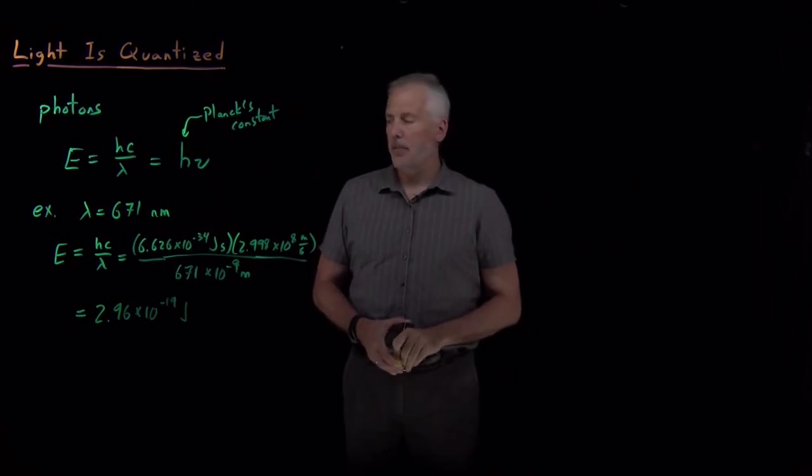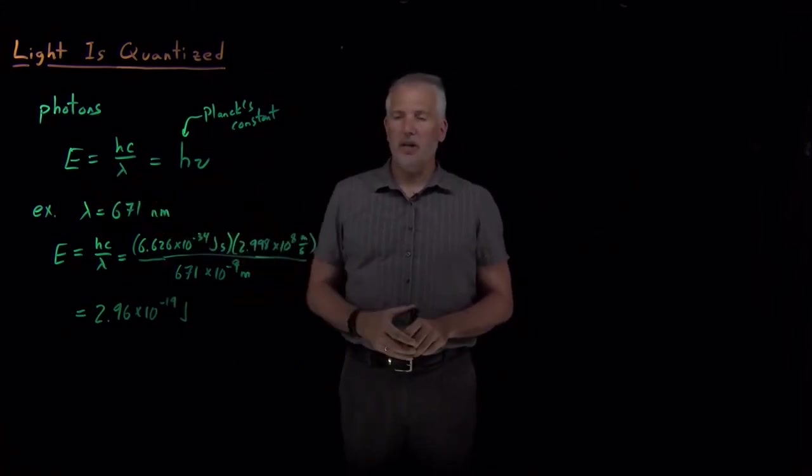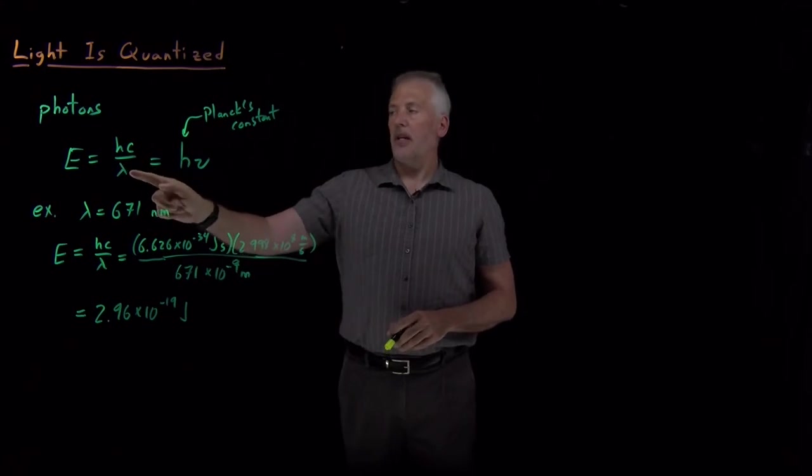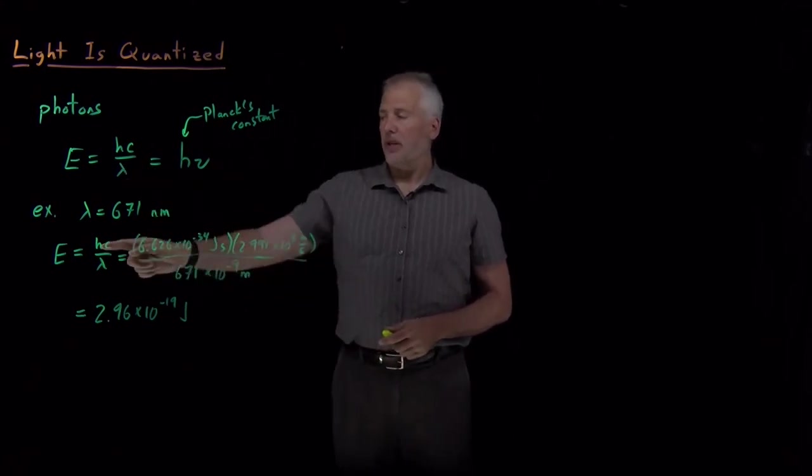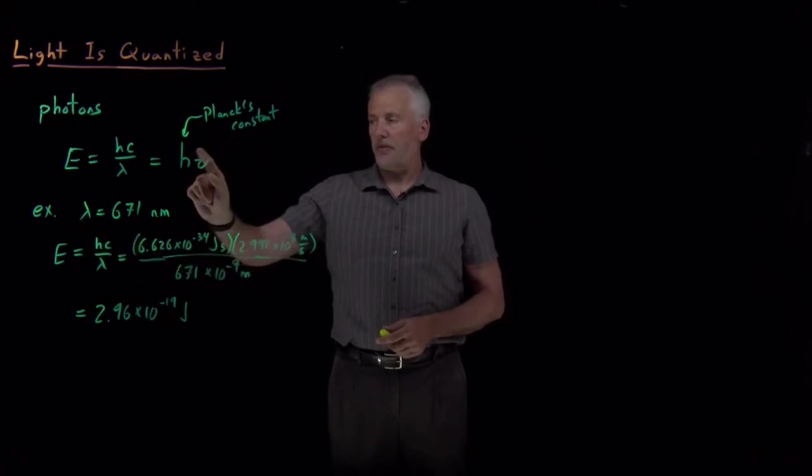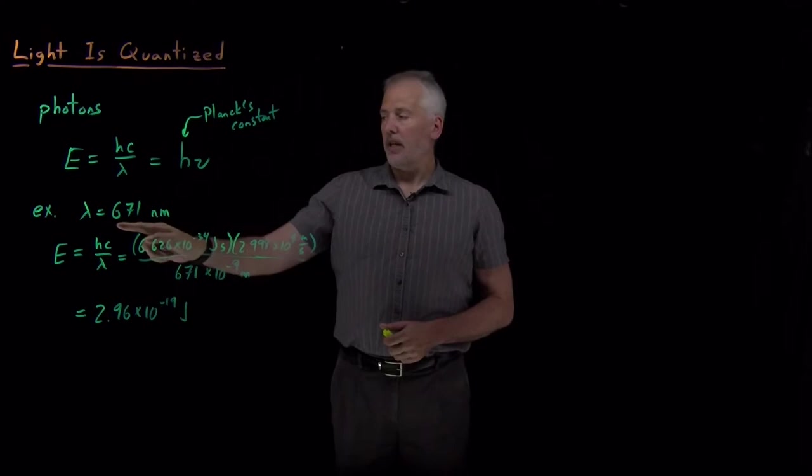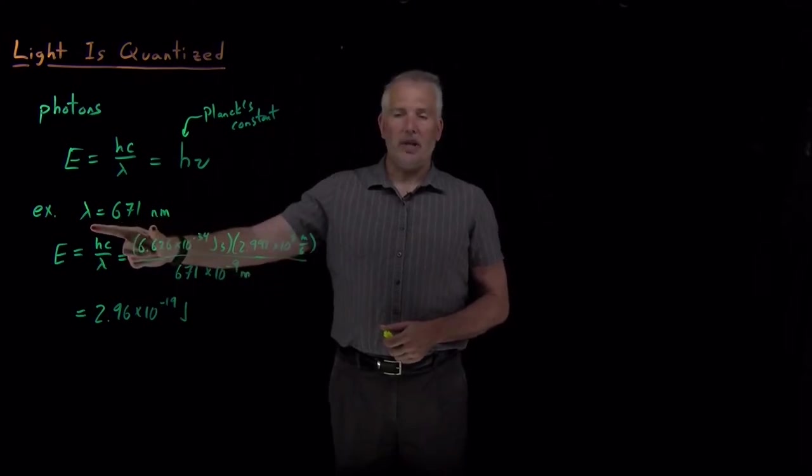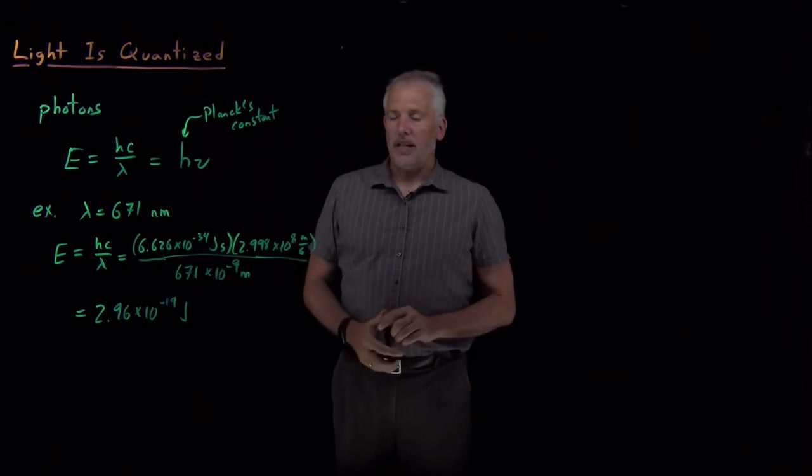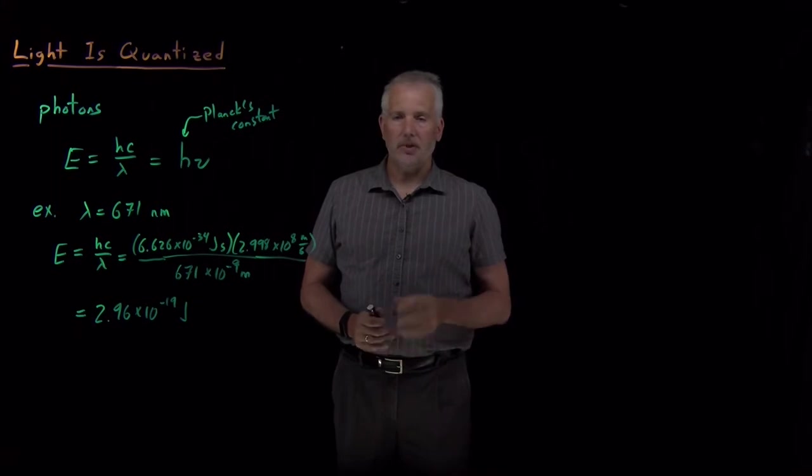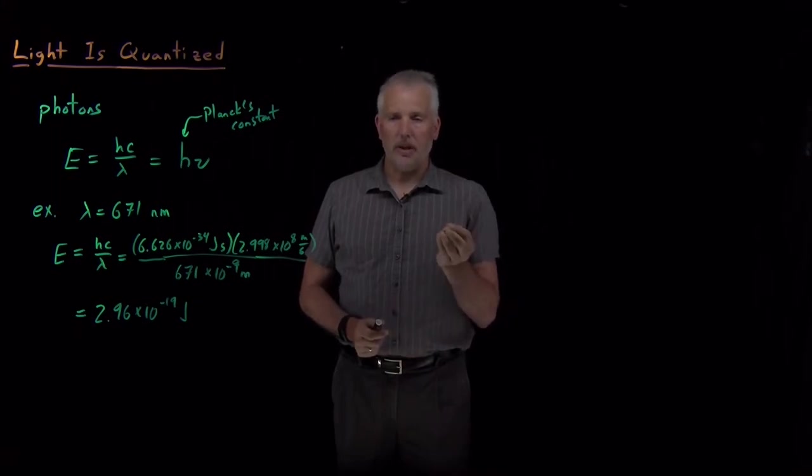That's the thing to keep in mind about these equations for light. They don't just tell us the relative values of wavelengths and frequencies. The reason we use these particular values of Planck's constant is to tell us this is the energy of a single photon of light of this red color that has a wavelength of 671 nanometers. So when I say light is quantized, what I mean by that statement is that light comes in quanta. Light comes in discrete little packets that I can't subdivide any further.